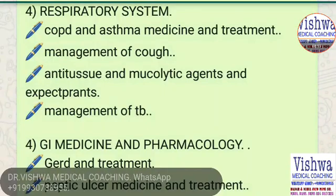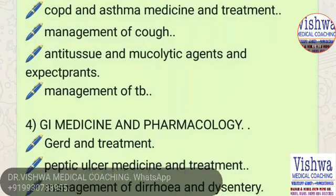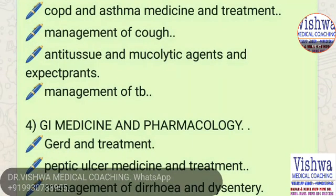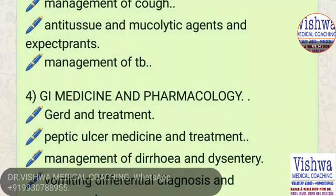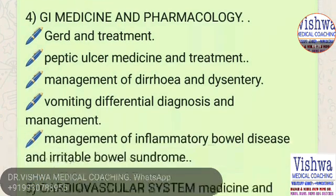In the respiratory system, we take the treatment of asthma as the main pharmacology topic, but we also cover clinically what COPD and asthma are, their clinical features, investigations, and management of asthma, management of cough — dry cough and productive cough — antitussive agents and mucolytic agents. We also take tuberculosis during the antimicrobials section.